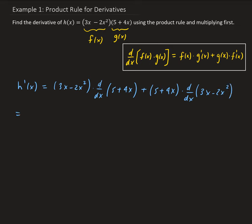So this is going to be equal to 3x minus 2x squared times the derivative of 5 plus 4x, which is 4. And then plus 5 plus 4x times the derivative of 3x minus 2x squared, which gives us 3 minus 4x.